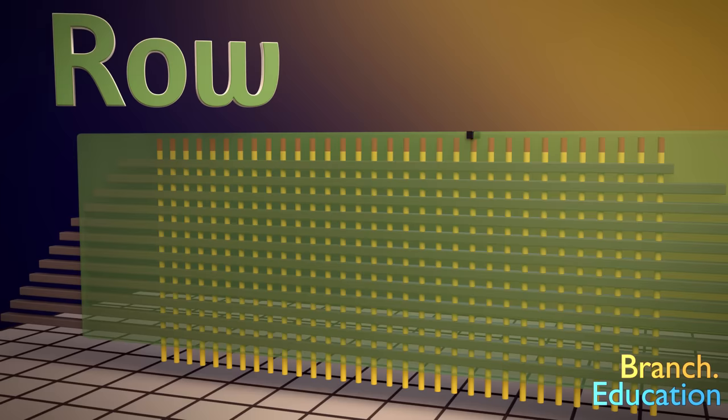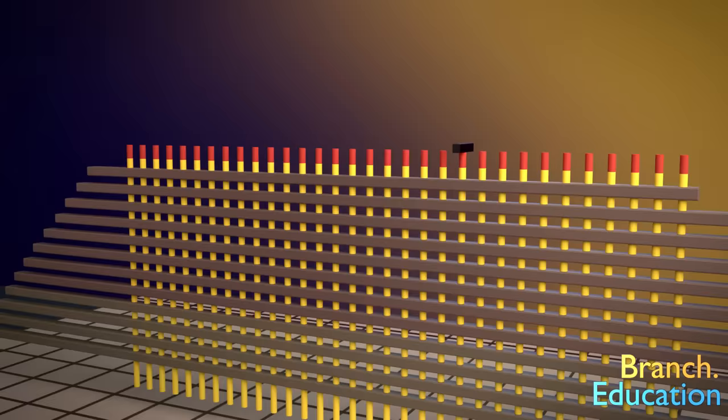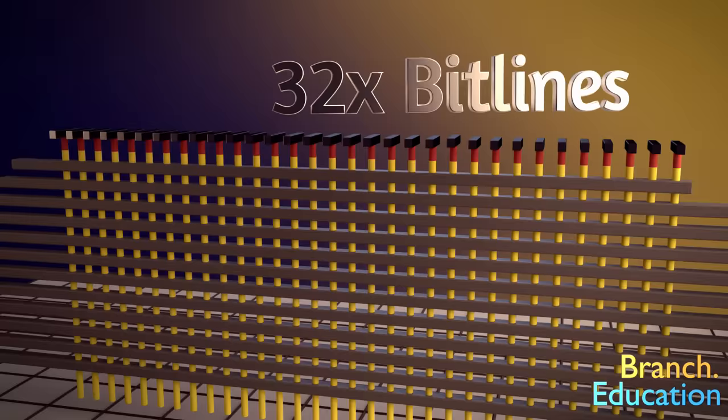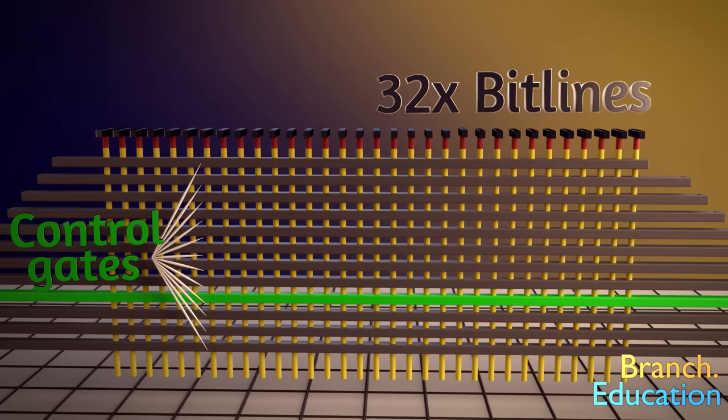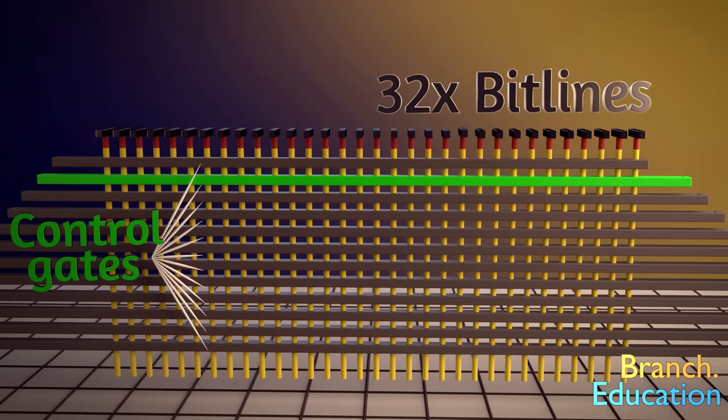When we duplicate the string, we also duplicate the bit line 32 times. However, rather than duplicate the control gates, we're going to have every cell in the same page share a common control gate. This makes it so that when information is written to or read from a row, an entire page composed of 32 adjacent cells, all in the same layer, are activated at the same time.